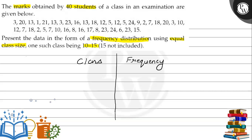So let's make a frequency distribution. This class is 0 to 5, then 5 to 10, then 10 to 15, then 15 to 20, then 20 to 25.